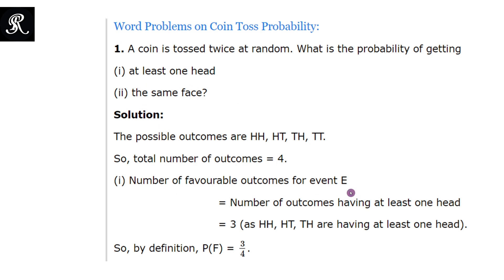It would be better to write E1. So E1 is the event equal to the number of outcomes having at least one head. In all these outcomes, the first three outcomes are included in event E1.